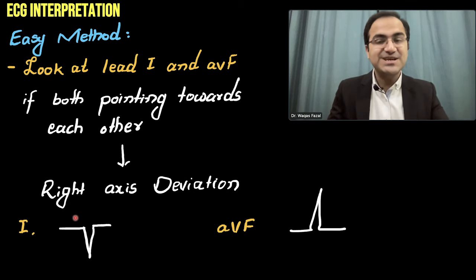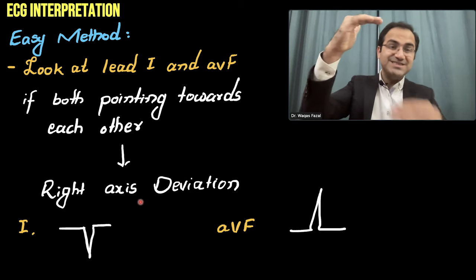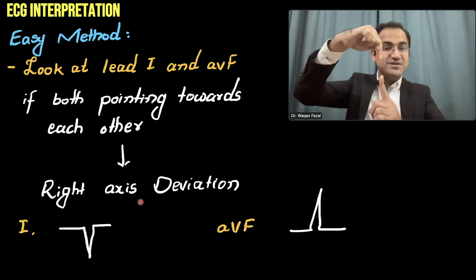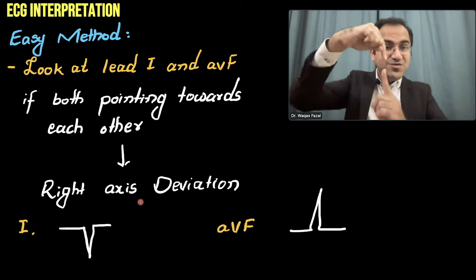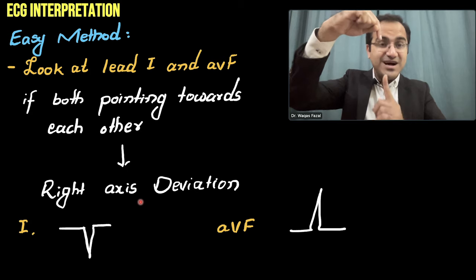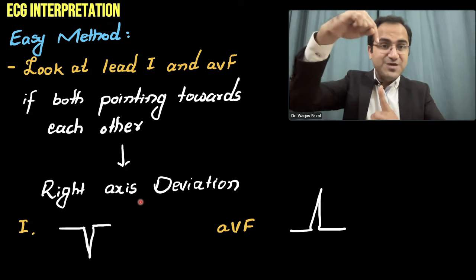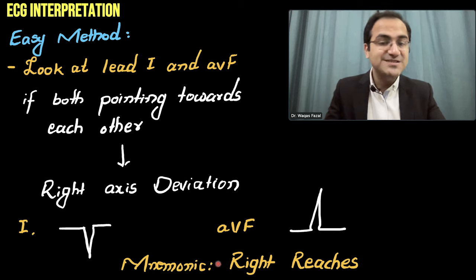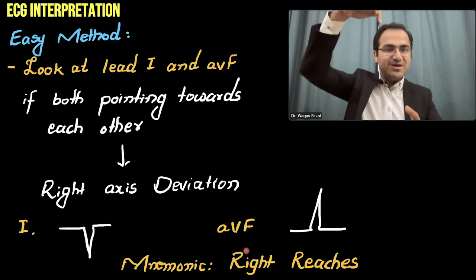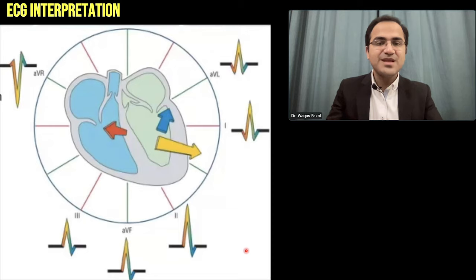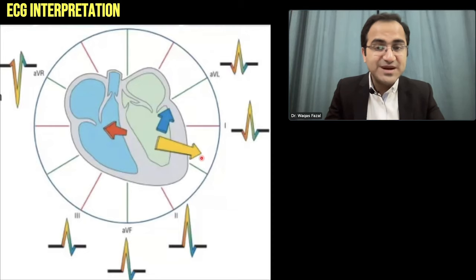In right axis deviation: Lead I is negative and Lead aVF is positive. On the ECG, Lead I is on the top and Lead aVF is below. You will see Lead I deflected downward and Lead aVF pointed upward — they are pointing toward each other, reaching out for each other. The mnemonic to remember this is 'Right Reaches' — in right axis deviation, the QRS complexes of Lead I and aVF reach toward each other.